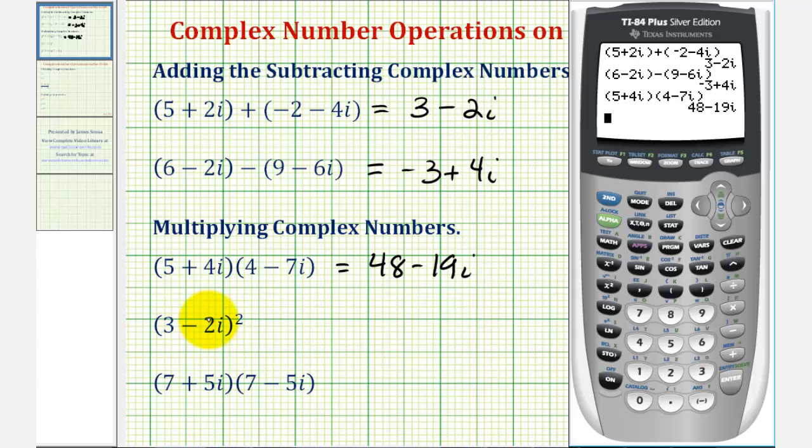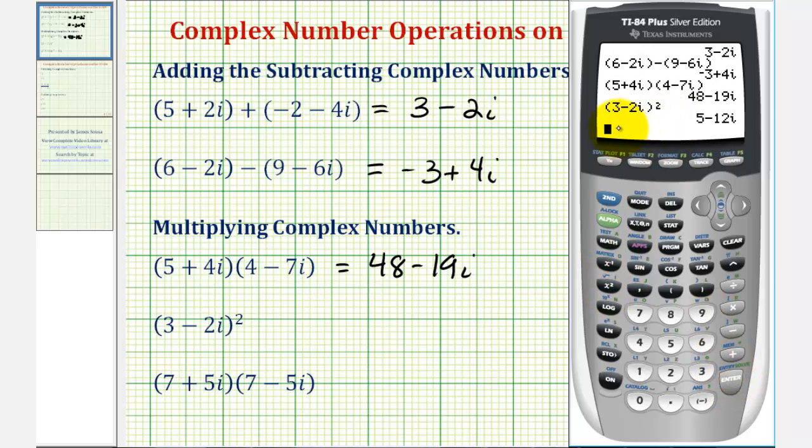Next, we're squaring the complex number three minus two i, so open parenthesis, three minus two i. Again, i is second decimal point, close parenthesis, and to square this, we'll press x squared, and then enter. So the square of three minus two i is equal to five minus twelve i.